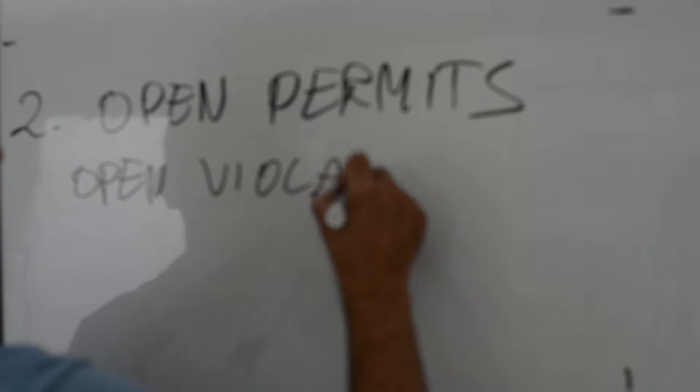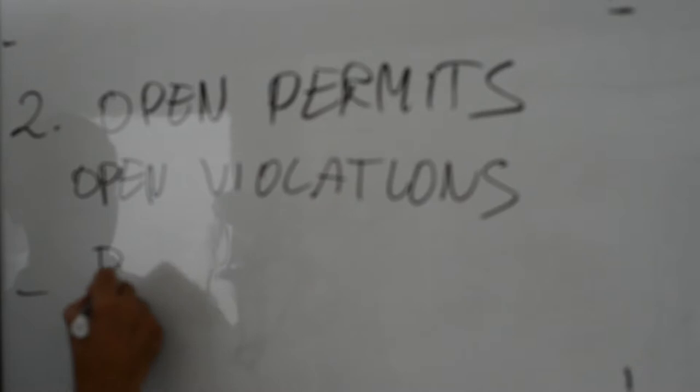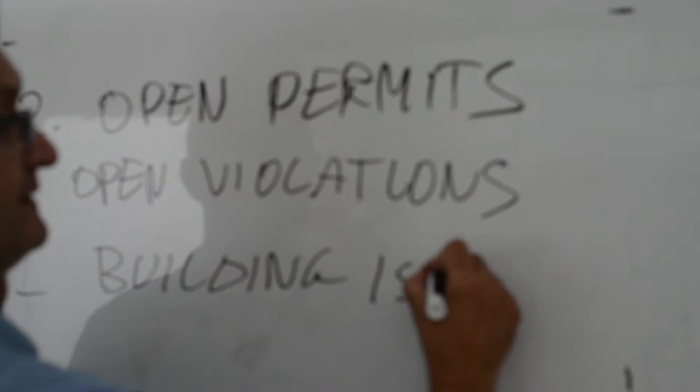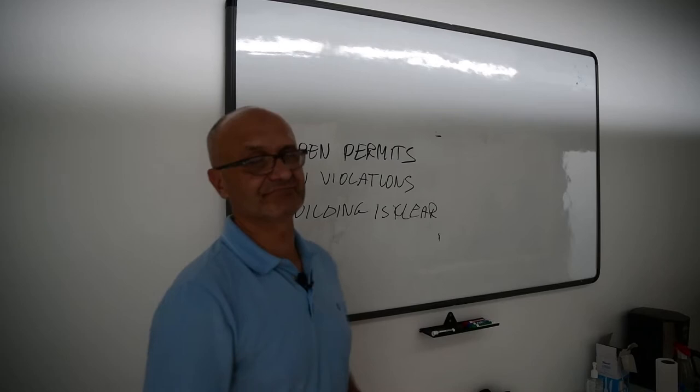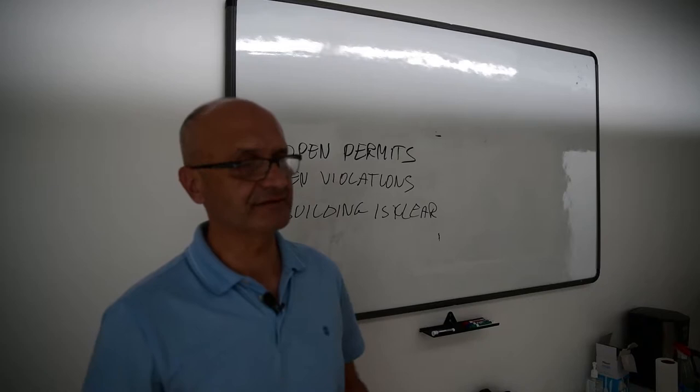Number two: there is no open permits, everything is closed, there is no open violations, saying that the building is clear. Why is that very important? Because owners sometimes neglect that stuff.